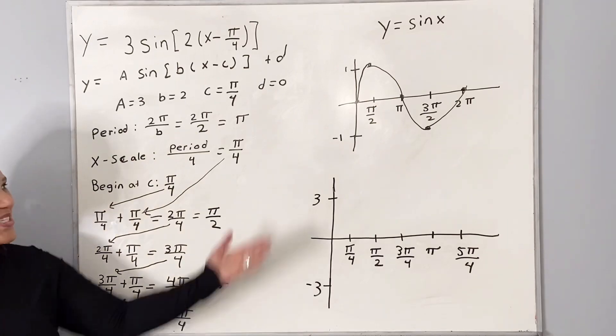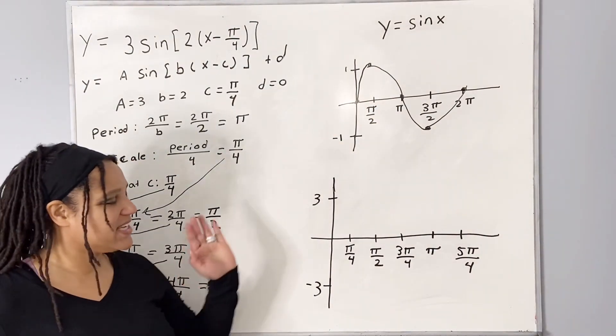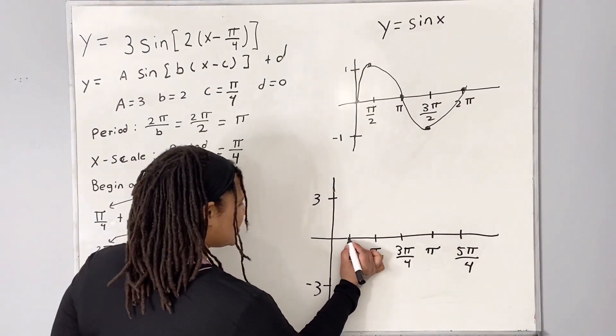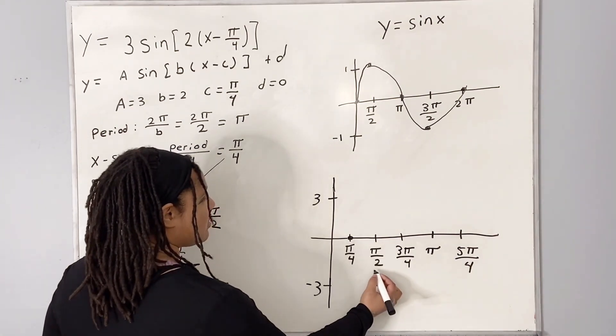So now all we're going to do is model our original graph, starting at 0, 0 shifted pi over 4 units to the right. So we are going to put a dot here. Our next increment over, we're going to put it at our high location just like our original graph.